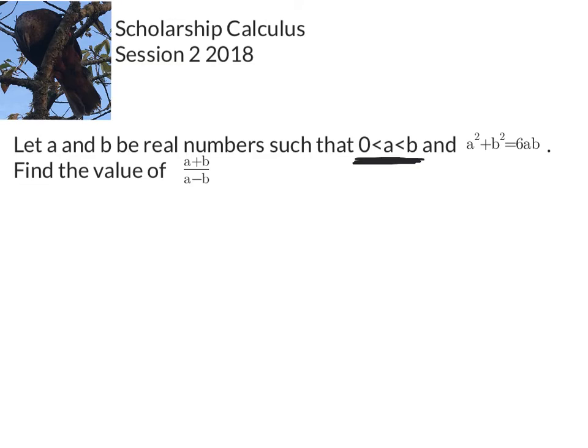Then the next thing we get told is that a² plus b² is equal to 6ab. And from there we have to find the value of (a + b) over (a - b).